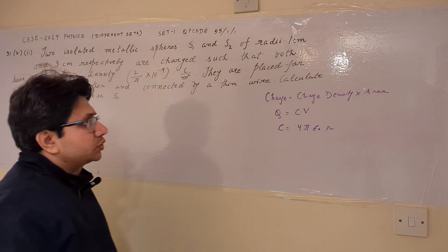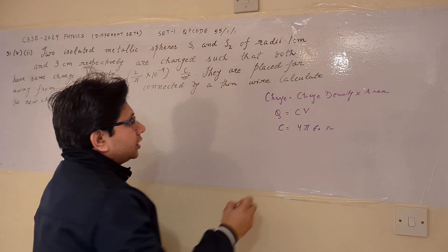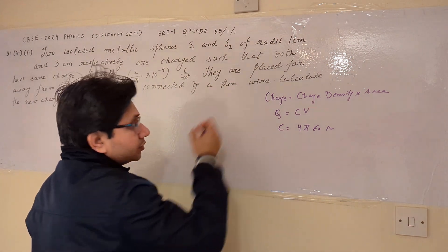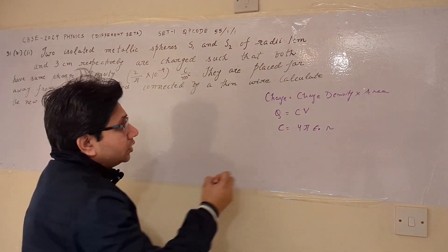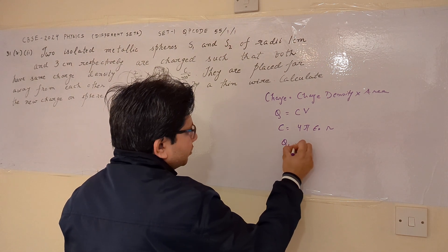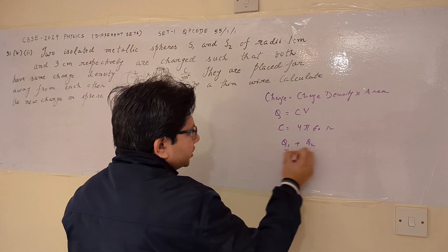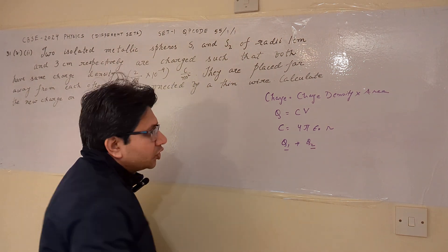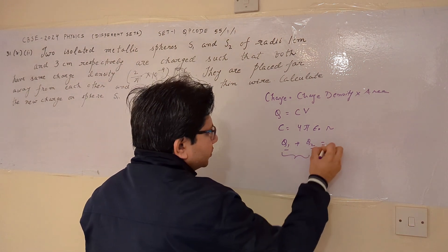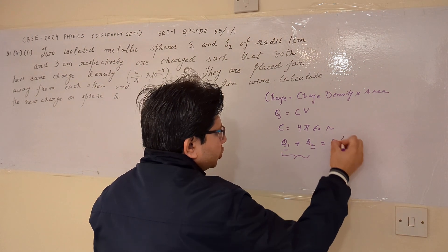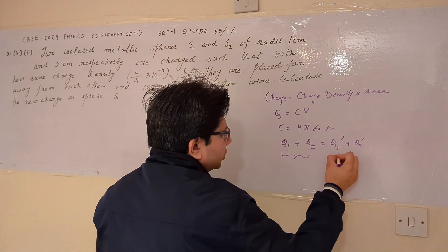This concept is used, and in any process like this, the charge is conserved. So conservation of charge is used. For example, the earlier charges are Q1 and Q2 respectively, and their total sum should be equal to Q1' + Q2'.